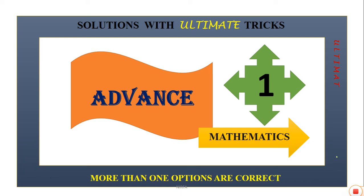Hello friends, today we will see some advanced level examples on mathematics. In this example, four options are given. There is a question having multiple correct answers — it means maybe one option is correct, maybe two options are correct, or maybe all four options are correct. That's why it is quite challenging, and we'll see how to solve this example.